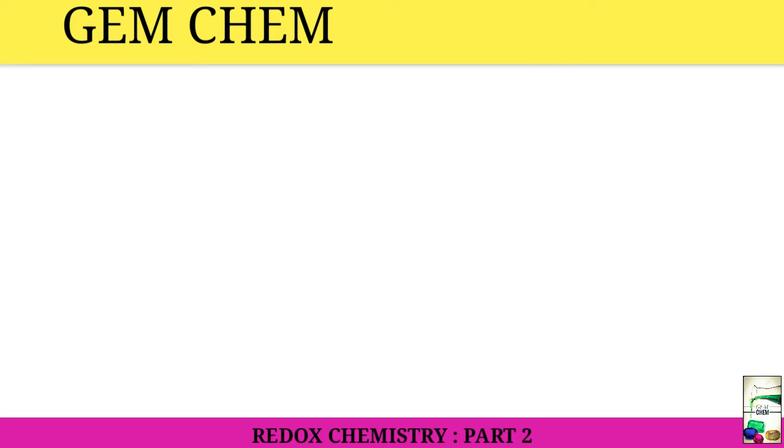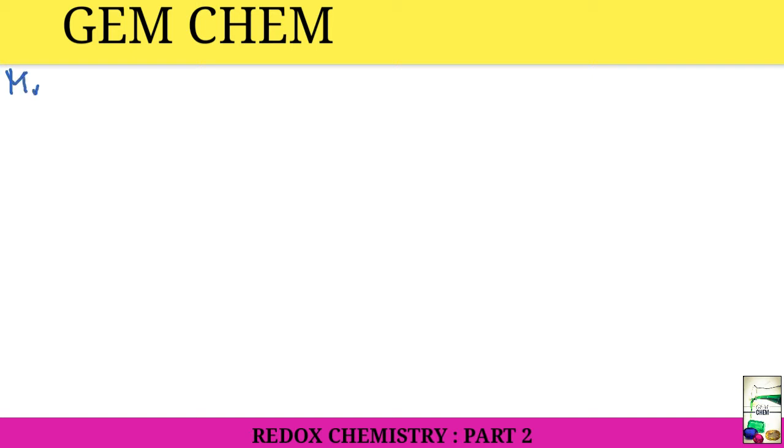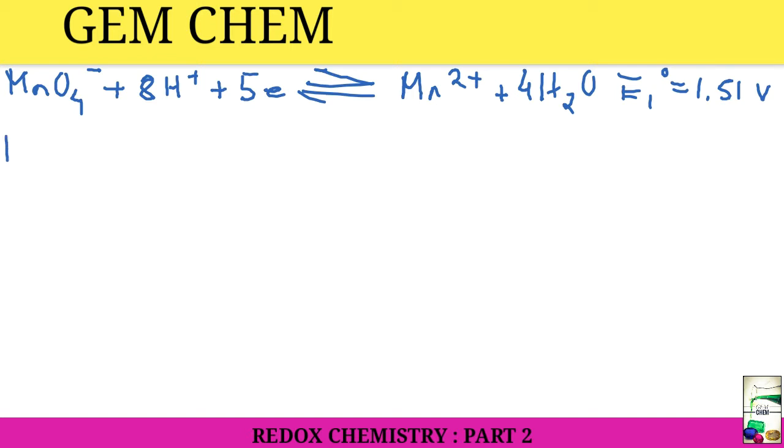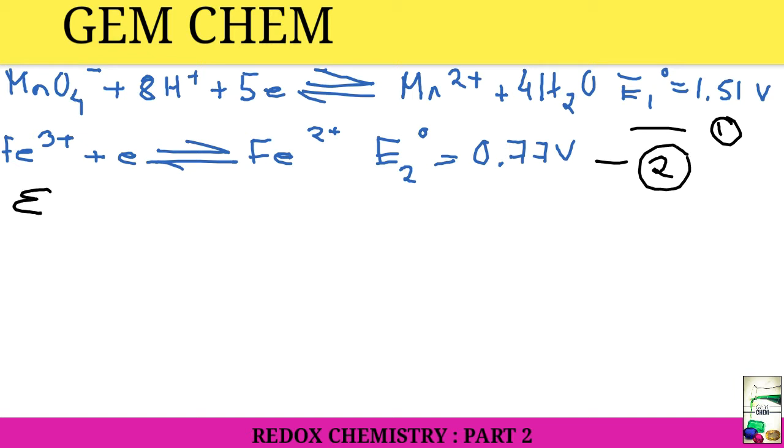First, we need to write the equations. First our equation is MnO4⁻ + 8H⁺ + 5e⁻ → Mn²⁺ + 4H2O, and here E₁⁰ will be given as 1.51 volt. Next is for iron: Fe³⁺ + e⁻ → Fe²⁺, and the standard potential E₂⁰ is 0.77 volt. We consider this as 1 and this is 2.